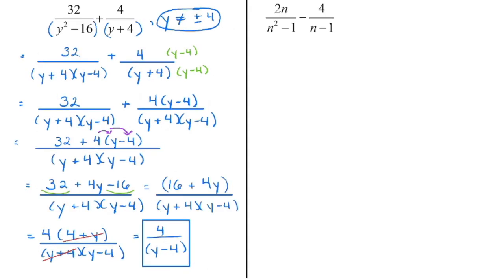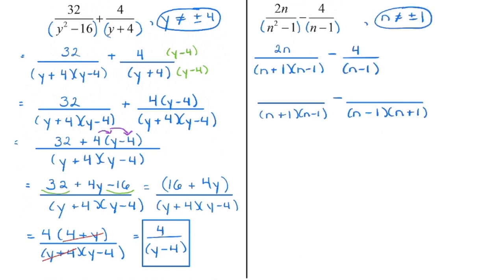For the next example: this is an expression — all we can do is simplify. We're going to bracket any binomials and see if we can factor. In factoring the binomials, we can see there's no greatest common factor, but we recognize that one is a difference of squares. And there's no greatest common factor in the other term, nor is it a perfect square, so there's nothing we can do with that one.